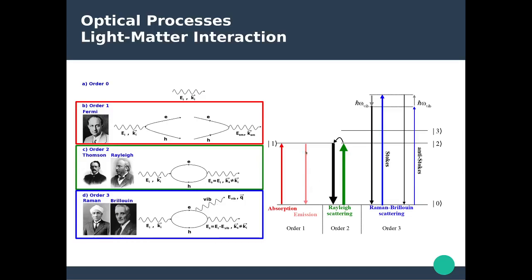The second order is elastic scattering, or Rayleigh scattering. Basically, you have the absorption of a photon giving rise to electron-hole pairs, and those electron-hole pairs recombine giving rise to a scattered photon. The scattered photon has the same energy as the incident photon but a different momentum. In the energy diagram, an electron moves up to an excited state, undergoes a non-radiative transition to a different excited state of the same energy, and then emits a photon as it relaxes back to the ground state.